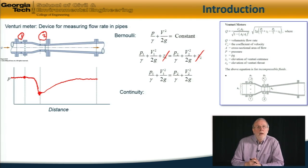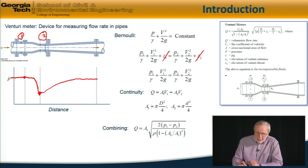Next, I invoke continuity. For an incompressible fluid, the volume flow rate Q is equal to A1V1, which is equal to A2V2. And for a round pipe, the areas are as shown. So combining these equations, we end up with this equation.